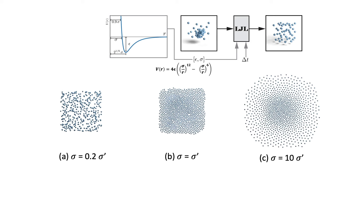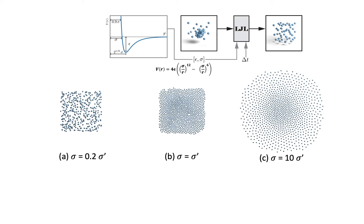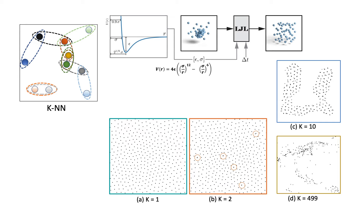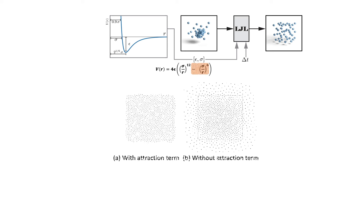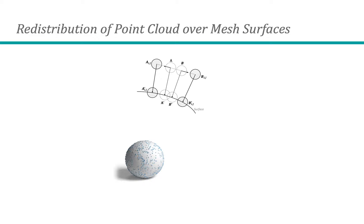The sigma value is an important parameter of the LGL. For an appropriate value, the final distribution is uniform and does not exceed the initial boundary too much. LGL subsystems that consider more than one nearest neighbor typically do not converge, so they are unable to achieve a uniform point distribution. We also find that the attraction term of the potential function is vital for the overall control of the final distribution.